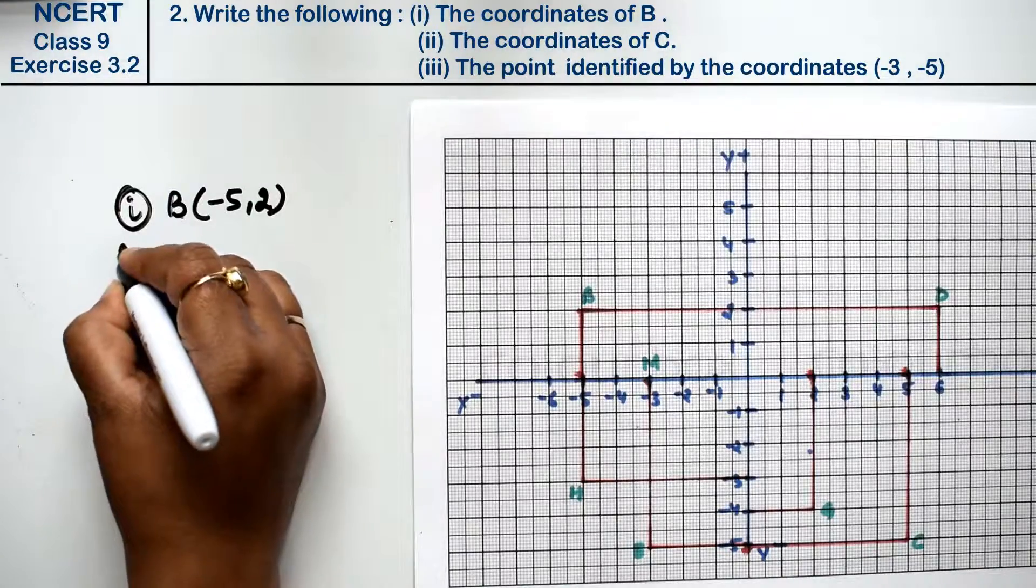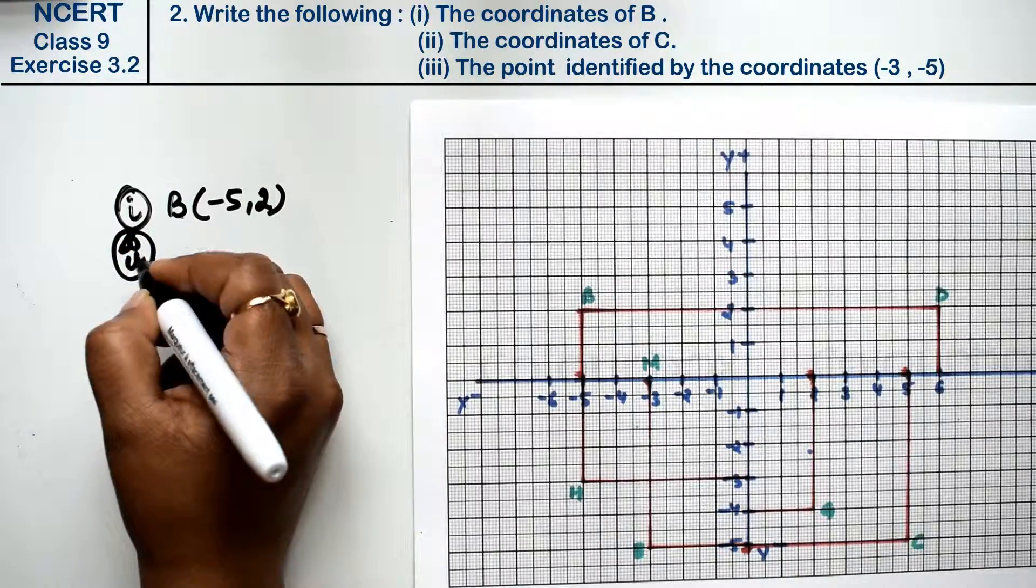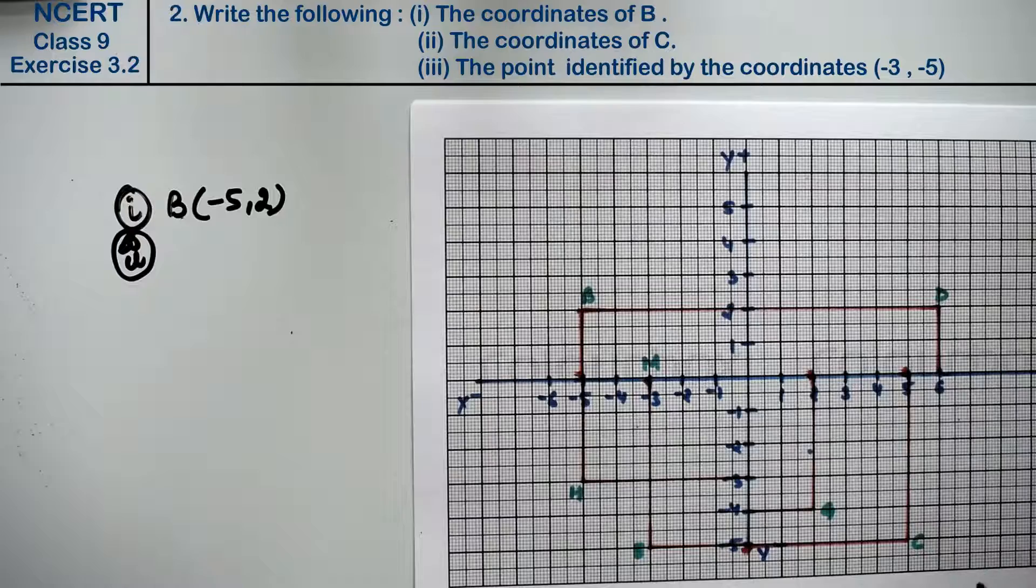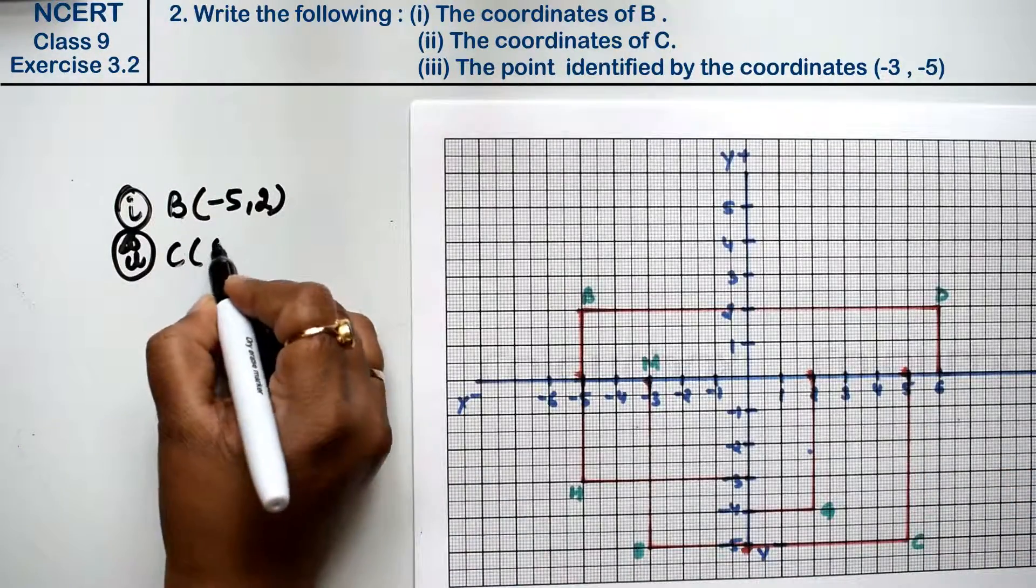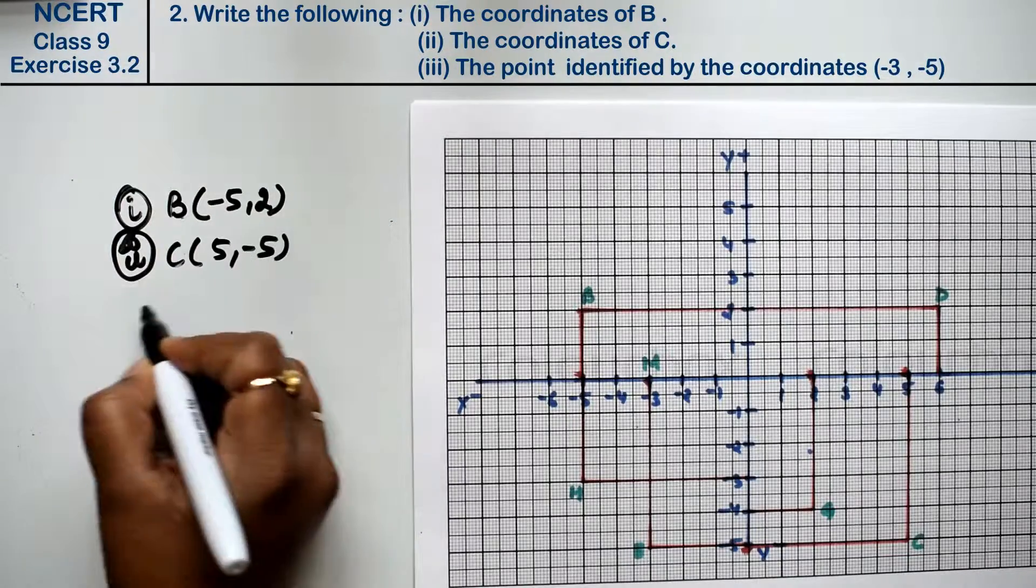Let's do second part. Second part, what are the coordinates of C? Where is the C point? This is the C point. Look here, y minus 5 and x 5. What is the point of C? 5 and minus 5 is the answer.